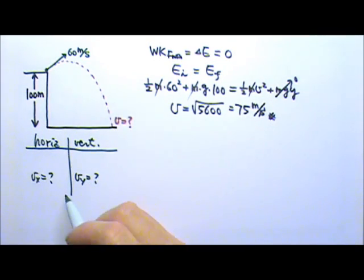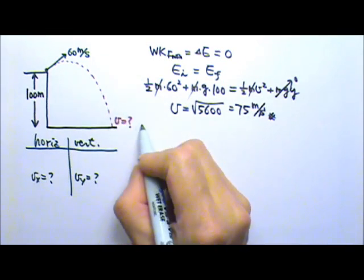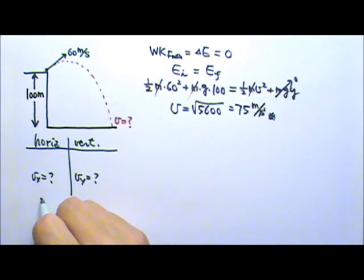And then use Pythagorean theorem to find the speed. Remember, if you have a horizontal component of the velocity and the vertical component of the velocity, we have to add them together